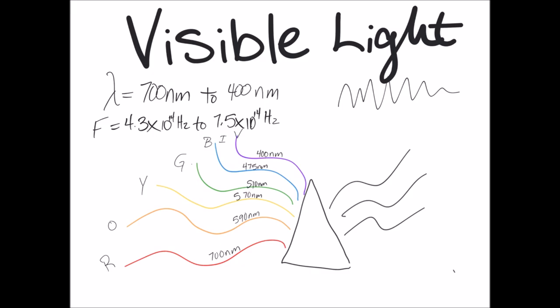Visible light has a wavelength between 700 nanometers and 400 nanometers. Visible light has a frequency between 4.3 x 10 to the 14th hertz and 7.5 x 10 to the 14th hertz. We see visible light as white light. White light is a mixture of all colors of light.